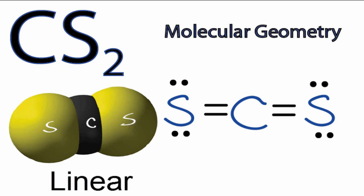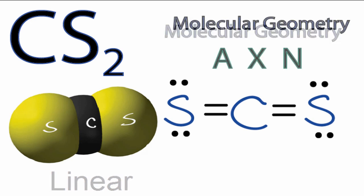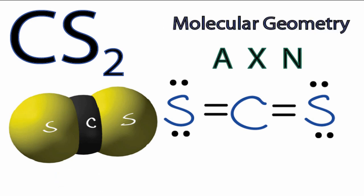We could also use the AXN notation to check if we have the correct molecular geometry. A, that's the carbon. X, that's the number of atoms bonded to the carbon. We have the two sulfurs, so we'll put a two right there. And N, that's the number of lone pair electrons around the carbon. All of the electron pairs for carbon are involved with chemical bonds to the sulfur, so we'll just ignore N.